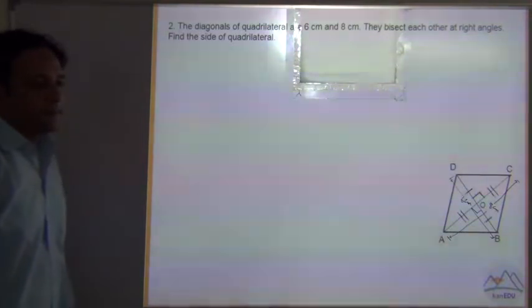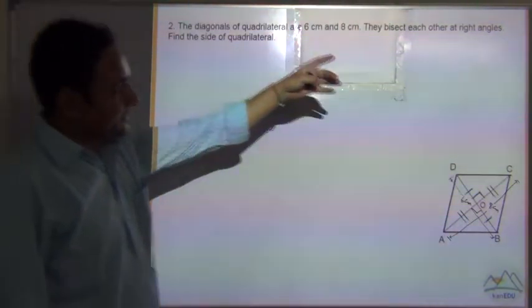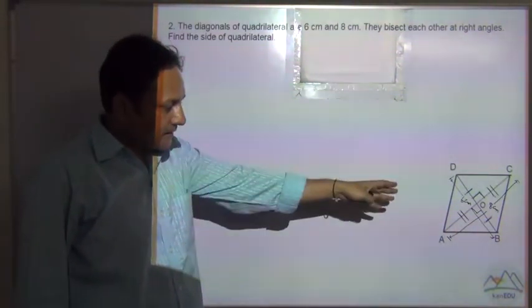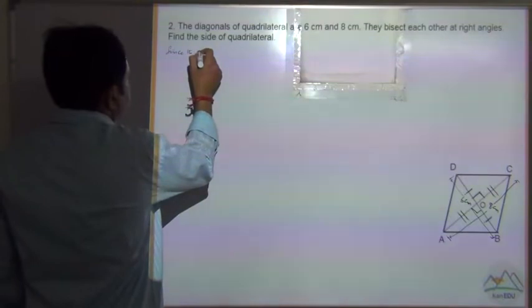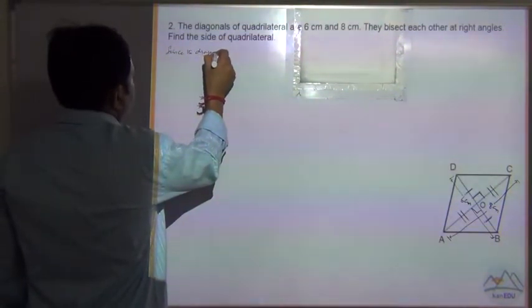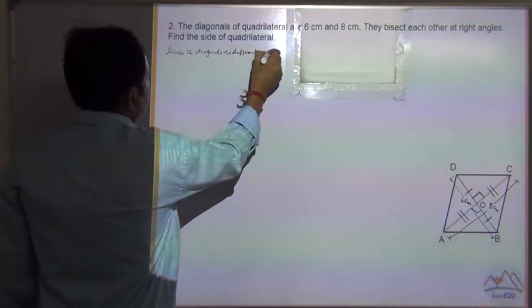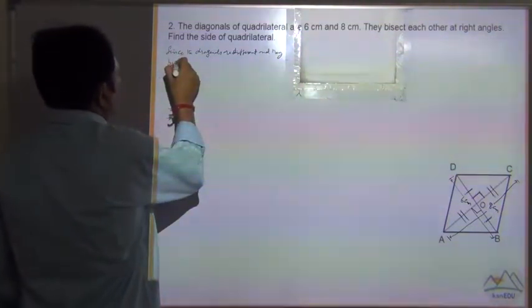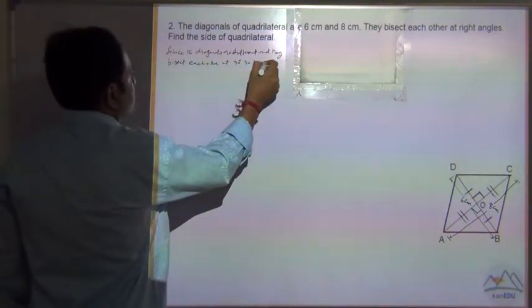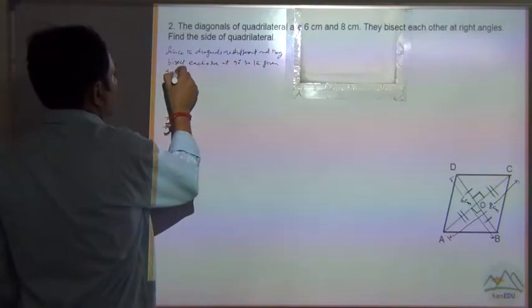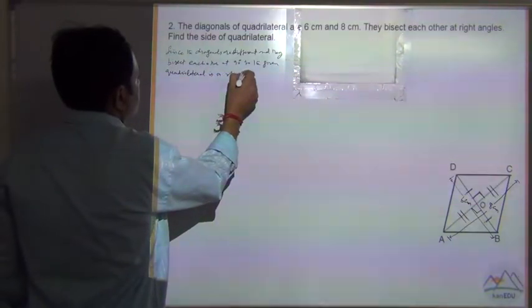Find the side of quadrilateral. Since the diagonals are different and they bisect each other at 90 degrees, the given quadrilateral is a rhombus.